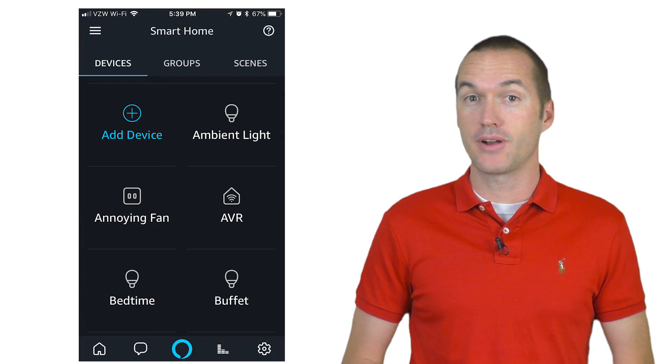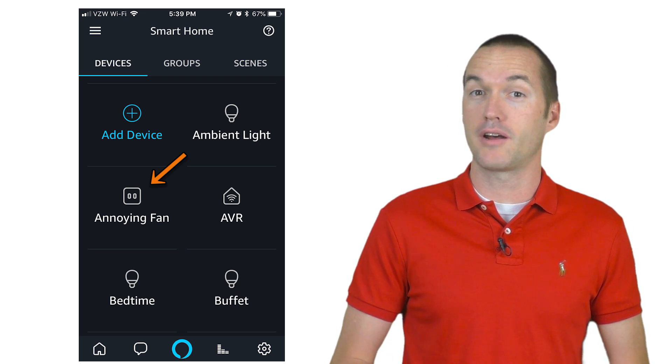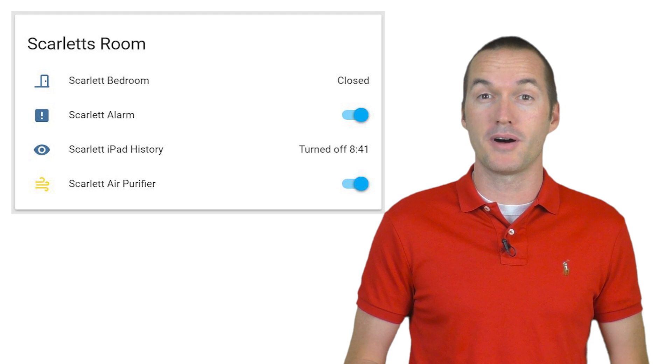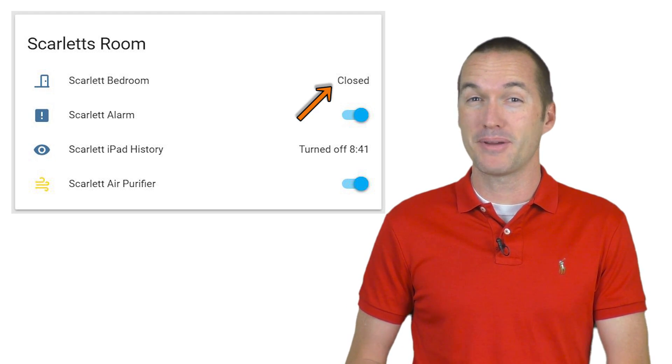With this Sonoff, she can just ask her Echo Dot to turn off the annoying fan and the Sonoff will shut off the power to it. But that's not really the star of this show. This Sonoff is also responsible for monitoring the state of my daughter's door and setting it up is super easy.